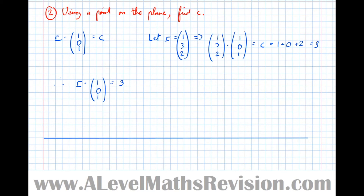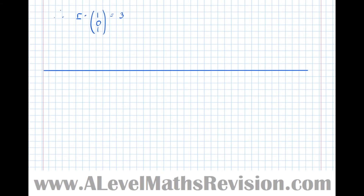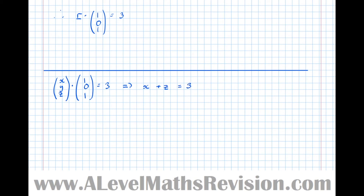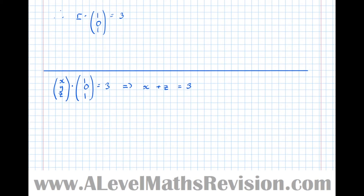There is a third and final way to write the equation of a plane: Cartesian form. It's easily accessible from the vector form, since r is just (x, y, z). So (x, y, z)·(1, 0, 1) = 3, giving x + z = 3. The coefficients of x, y, and z are simply the respective components of the normal vector.